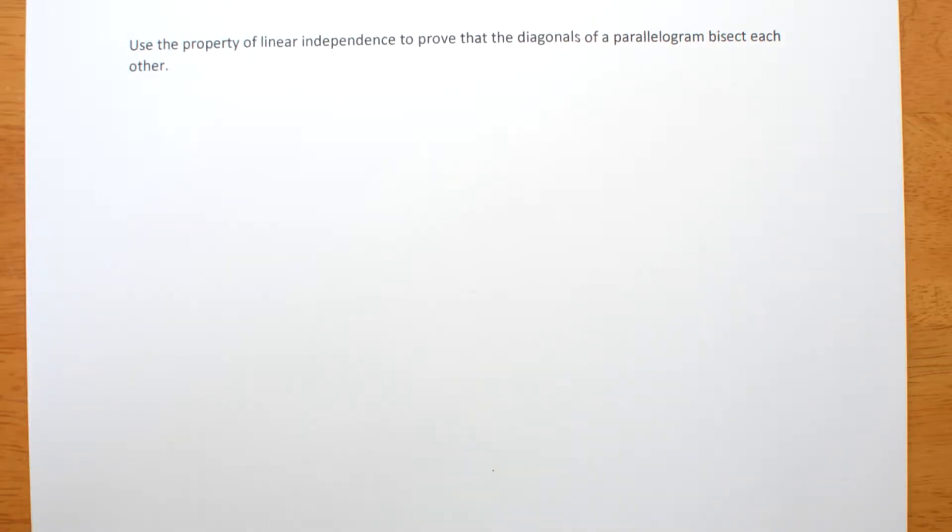Use the property of linear independence to prove that the diagonals of a parallelogram bisect each other. This is my version of the textbook's example 23. My method is the same, but the way I write it out will be slightly different.